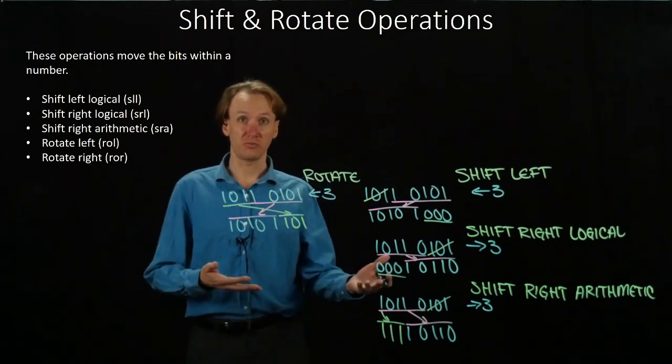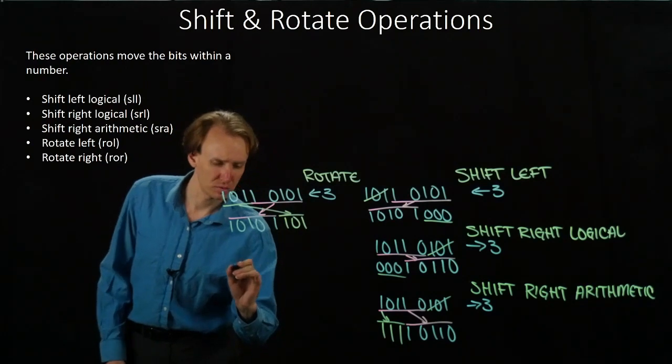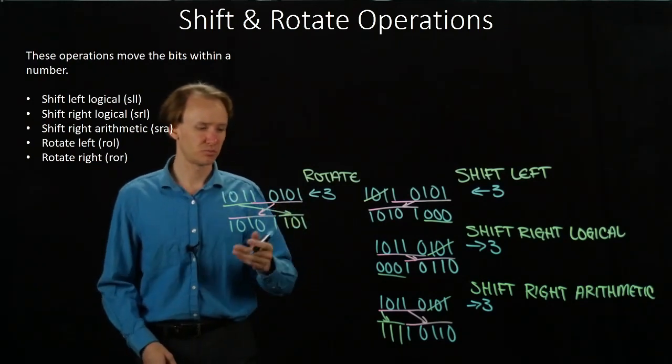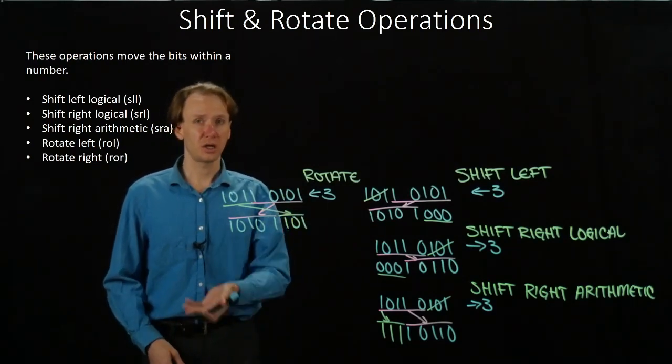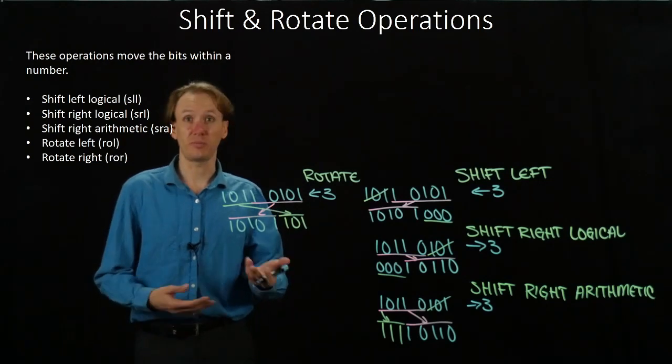Now, a rotate right operation will pretty much work exactly the same way. We'll just rotate our bits, we'll shift our bits right and rotate the ones that fall off back in on the left.